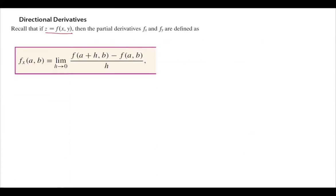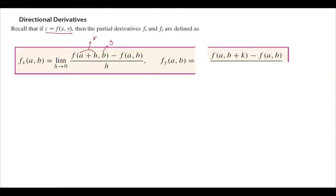The partial derivative of f with respect to x is the limit of f of (a plus h, b) minus f of (a, b) over h as h goes to 0. Similarly, the partial derivative of f with respect to y at point (a, b) is the limit of f of (a, b plus k) minus f of (a, b) divided by k as k goes to 0.